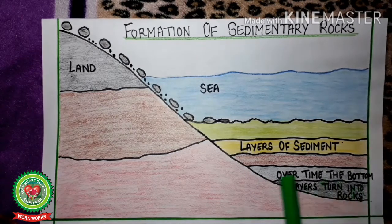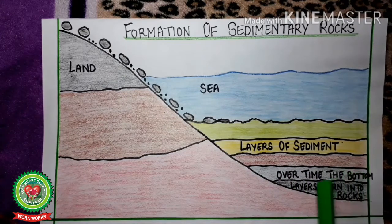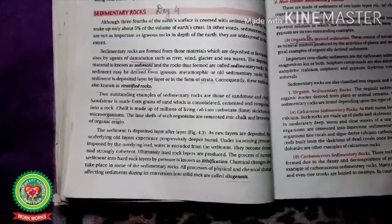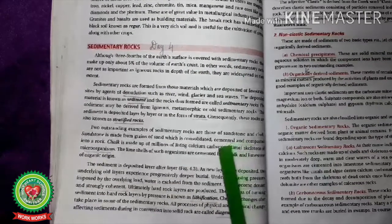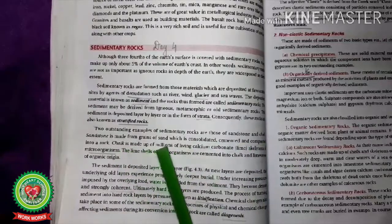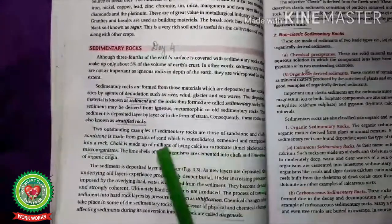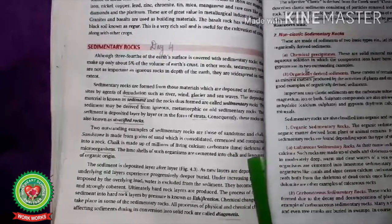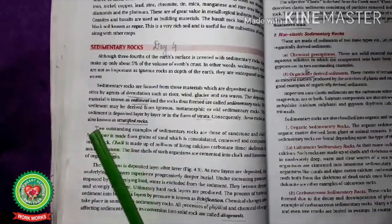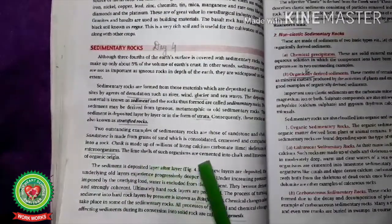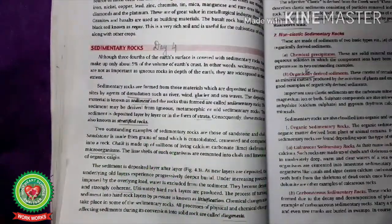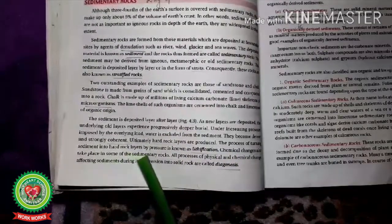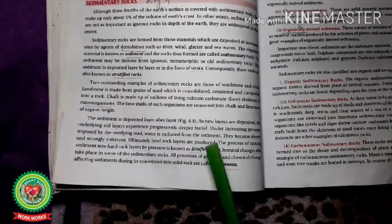As sedimentary rocks are formed in layers, they are also called stratified rocks. Two best examples are sandstone and chalk. Sandstone is made from grains of sand consolidated, cemented, and compacted into rock. Chalk is made up of millions of calcium carbonate particles — lime — which are the skeletons of microorganisms, cemented into chalk and limestone to form organic rock. The process of turning sediment into hard rock layers by pressure is known as lithification.